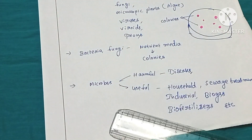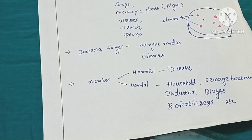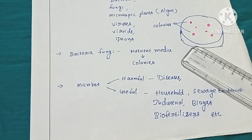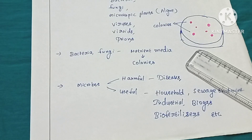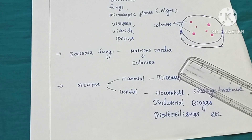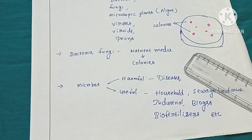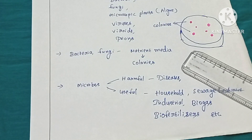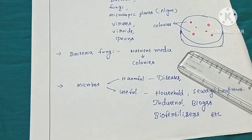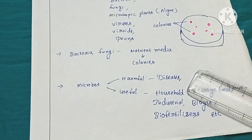Microorganisms may be harmful to human beings or useful to human beings. Harmful microorganisms cause diseases to humans, animals, and plants. Pathogenic organisms are harmful organisms. Food spoilage, vegetable spoilage, and crop diseases such as fungal diseases, rust, and smuts are also caused by harmful microorganisms.